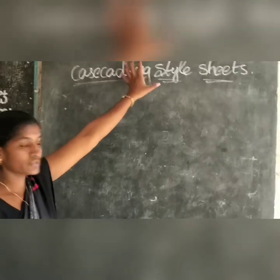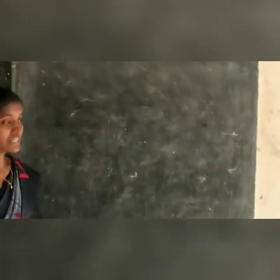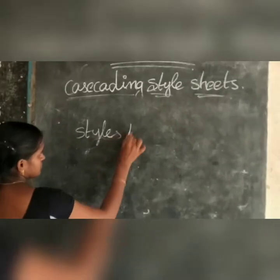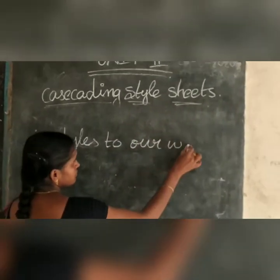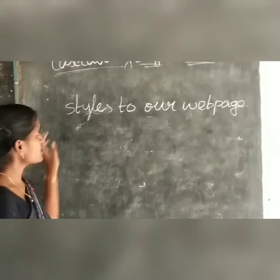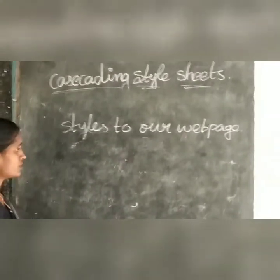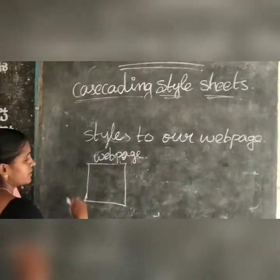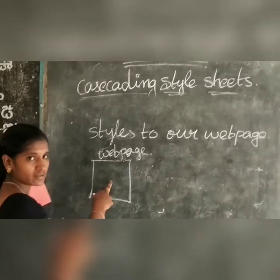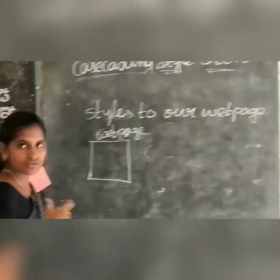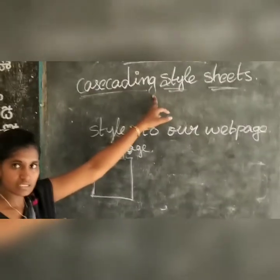It is the second unit of the Web Technology subject. Cascading Style Sheets means whenever we have to give some styles to our web page, we have to use CSS. Whenever we want to change the background color or text of a web page, change any text, font sizes, or font faces, we will have to use Cascading Style Sheets.